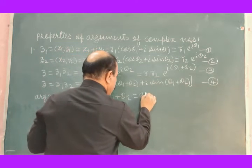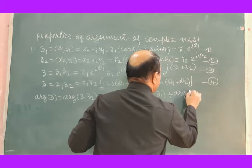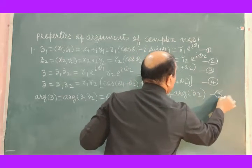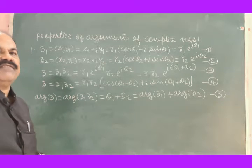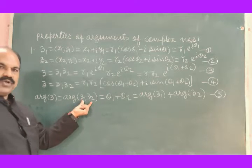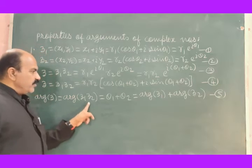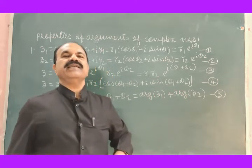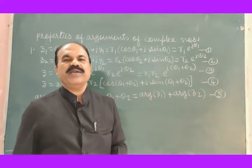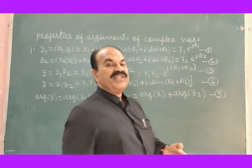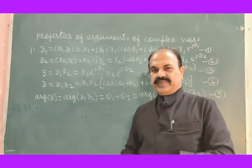What is θ1? θ1 is the argument of Z1. What is θ2? θ2 is the argument of Z2. From equation 5, argument of Z1 into Z2 equals argument of Z1 plus argument of Z2. So the first property of argument of complex numbers is verified: argument of product of two complex numbers is always equal to the sum of their arguments.